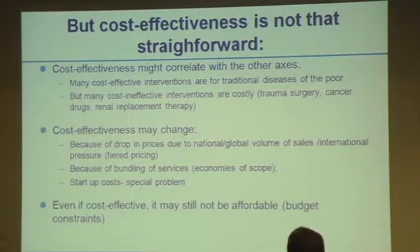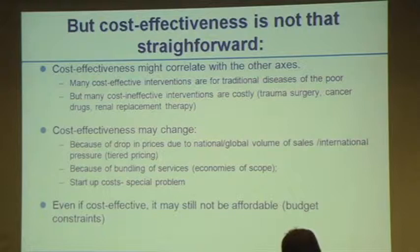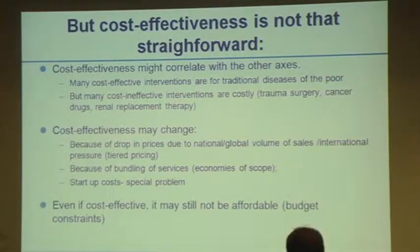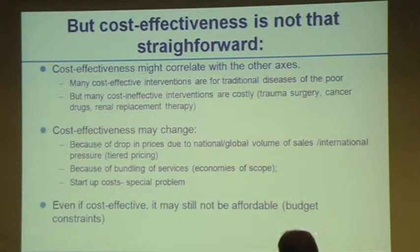Cost-effectiveness is not straightforward. It might correlate with the other axes, and sometimes that's good — many cost-effective interventions are for traditional diseases of the poor, so covering them also provides financial protection. But you may also need to make choices for interventions that are cost-ineffective but costly, and therefore could inflict a financial burden and cause catastrophic payments. That's one area where you actually need to make a trade-off.